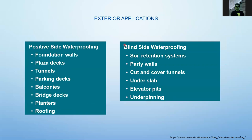For exterior application, the positive side includes foundation walls, plaza decks, tunnels, parking decks, balconies, bridge decks, planters, and roofing. The blind side waterproofing for exterior includes soil retention systems, party walls, firewalls, cut-and-cover tunnels, under-slab areas, elevator pits, and underpinning. These are the different applications of waterproofing on the exterior of a building.